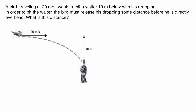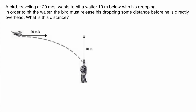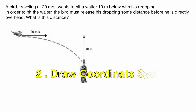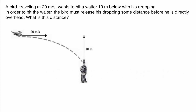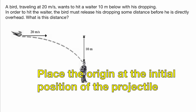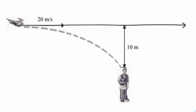We're going to use our method of problem-solving. The first step is to visualize the problem. Here we have the bird flying horizontally, releasing its dropping, and hoping it lands on the waiter's head. The second step is to draw a coordinate system. A good choice is wherever the object is first launched from, so we place it at the moment the object is released. We have our x and y dimensions.